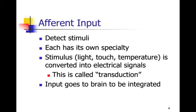Transduction then goes to the central nervous system to be integrated. The input stimulus is converted to an electrical signal and goes to the brain to be integrated.